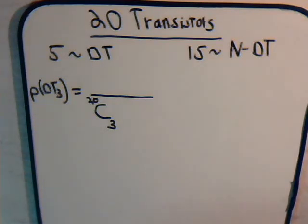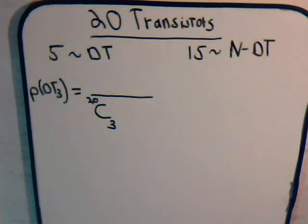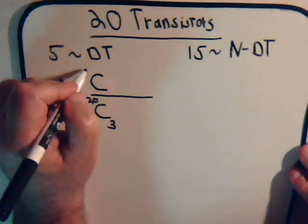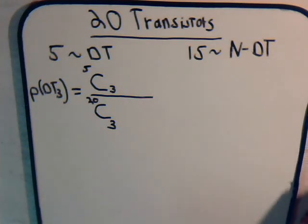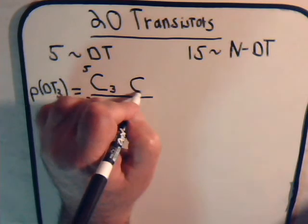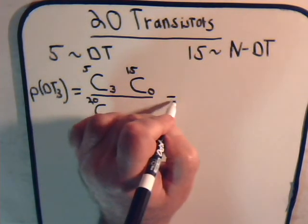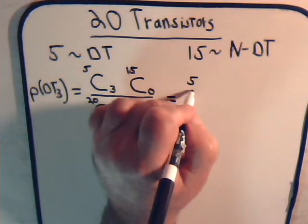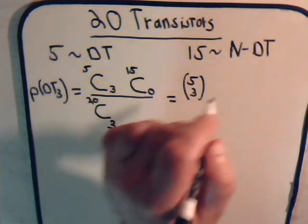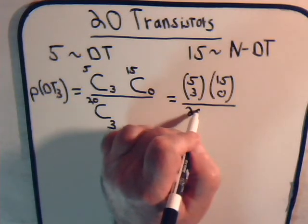The total number of ways to select three defective ones: in our box there are five defective transistors, so we ask how many ways we can select three out of five when order doesn't matter. We selected three transistors total, all defective, meaning zero were chosen from the fifteen non-defective ones. Written as binomial coefficients, the numerator is C(5,3) × C(15,0), divided by C(20,3).